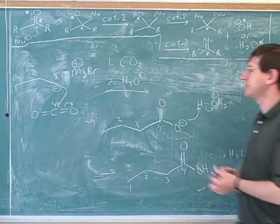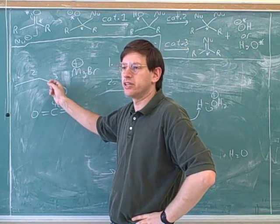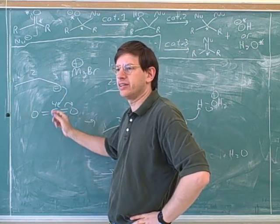Even though we have never seen maybe a reaction with carbon dioxide, we should be able to predict what's going to happen here. We know that Grignards are good nucleophiles. Why is it reasonable for this carbon here to act like an electrophile?